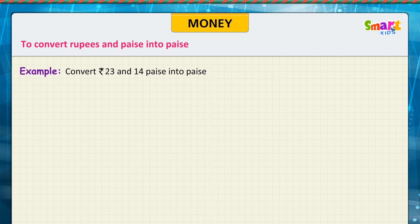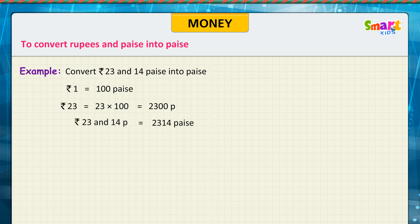We know that 1 rupee is equal to 100 paise. So 23 rupees is equal to 23 into 100, which is equal to 2300 paise. Therefore, 23 rupees and 14 paise is equal to 2314 paise.